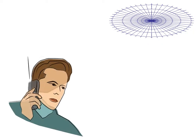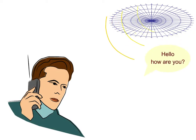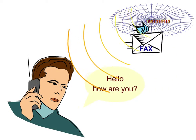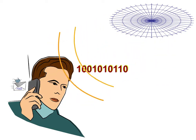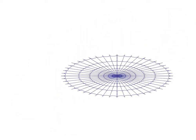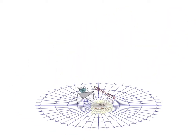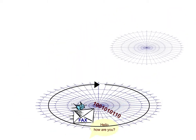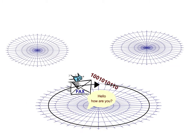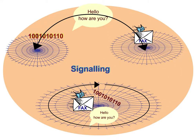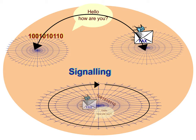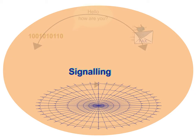To enable GSM customers to use speech, fax and data services wherever they are within the network, information and data must be exchanged within, as well as between, different networks. This process is called signaling.